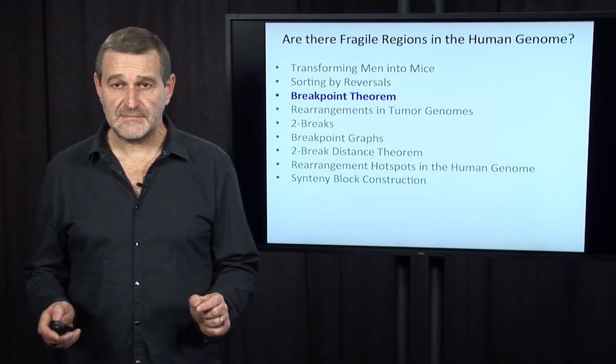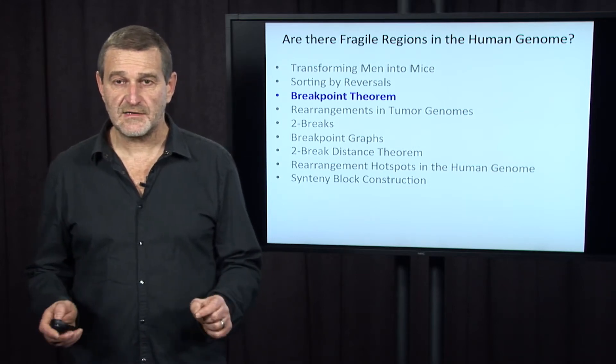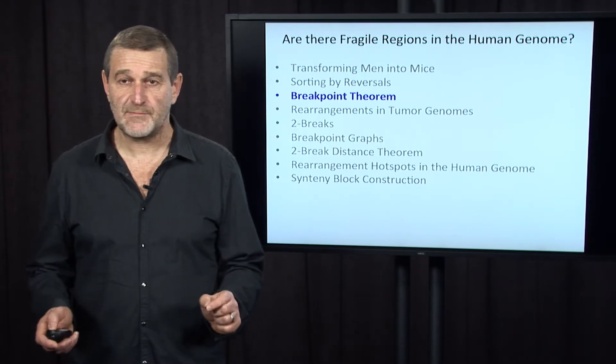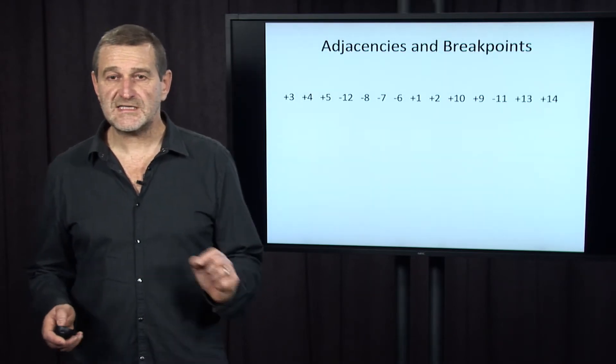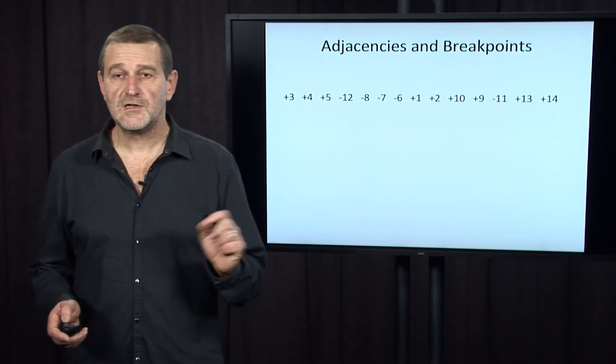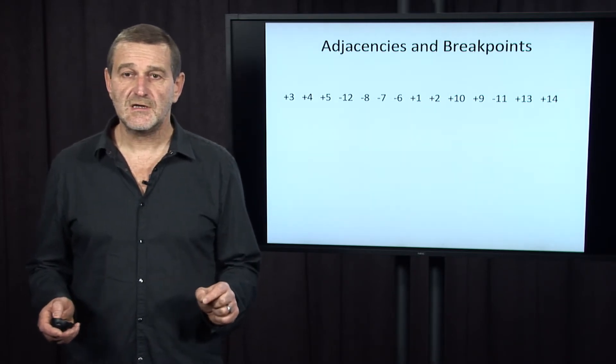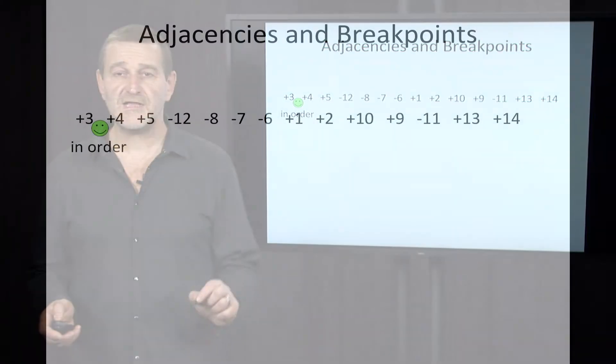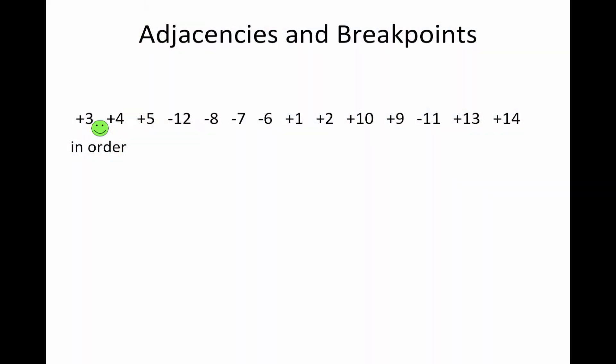There will be a few theorems in this section, and let's prove the first one, the breakpoint theorem. First, let's define the notions of adjacencies and breakpoints looking at this permutation. Plus three and plus four are arranged in the right order, in the same order they are arranged in the identity permutation. Let's call it an adjacency.